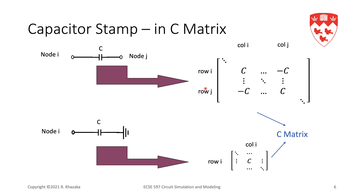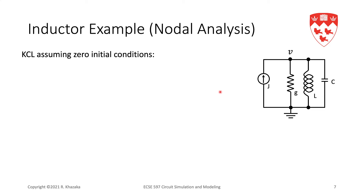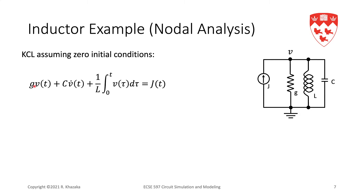Now let's take a look at the stamp for inductors. Consider this simple RLC circuit. If we write KCL at node 1, we get: the current in the resistor GV, the current in the capacitor C·V-dot, the current in the inductor, and on the right-hand side the independent source. The problem here is that the inductor current involves an integral, so we end up with an integro-differential equation, which causes problems.